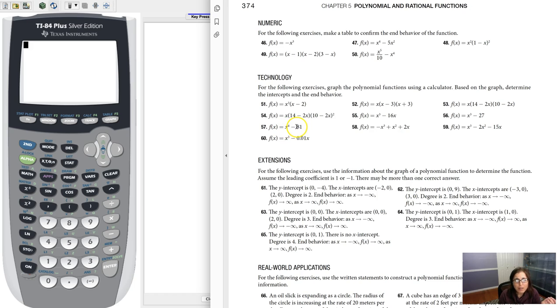In terms of x-intercepts, if I wanted to factor x to the fourth minus 81, that is a difference of squares, so it would be x squared minus 9, x squared plus 9, and then the x squared minus 9 would break to x minus 3, x plus 3. So I think there's two x-intercepts at 3 and negative 3, just looking at it.